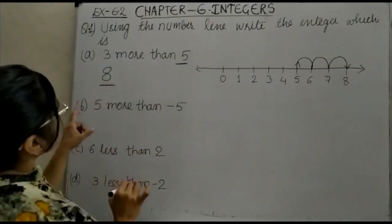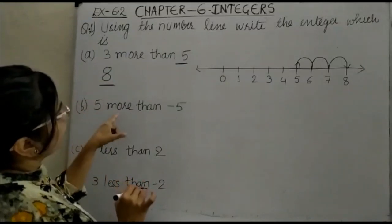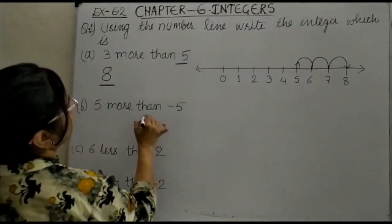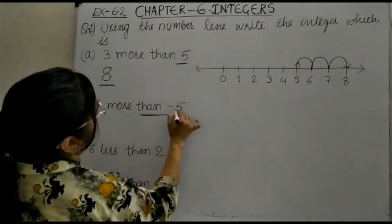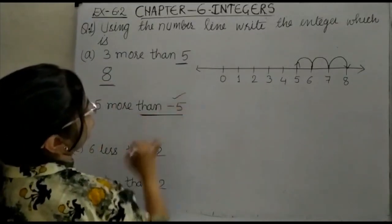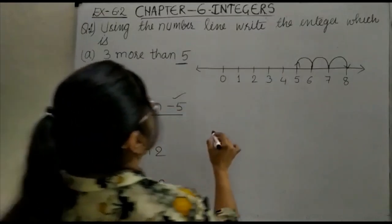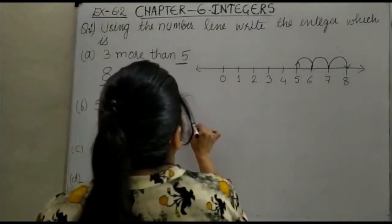Next is 5 more than minus 5. So we start at minus 5 on the number line. Again, we will draw the number line.